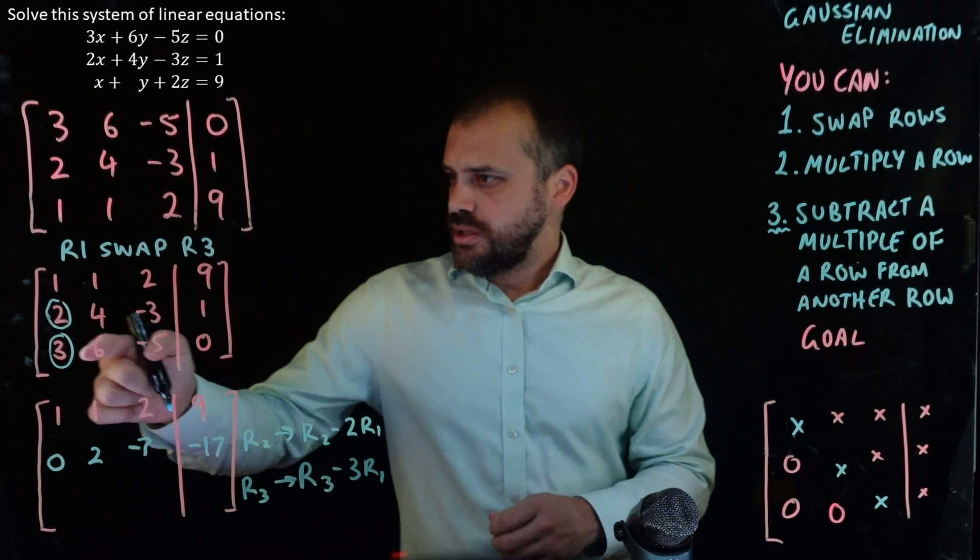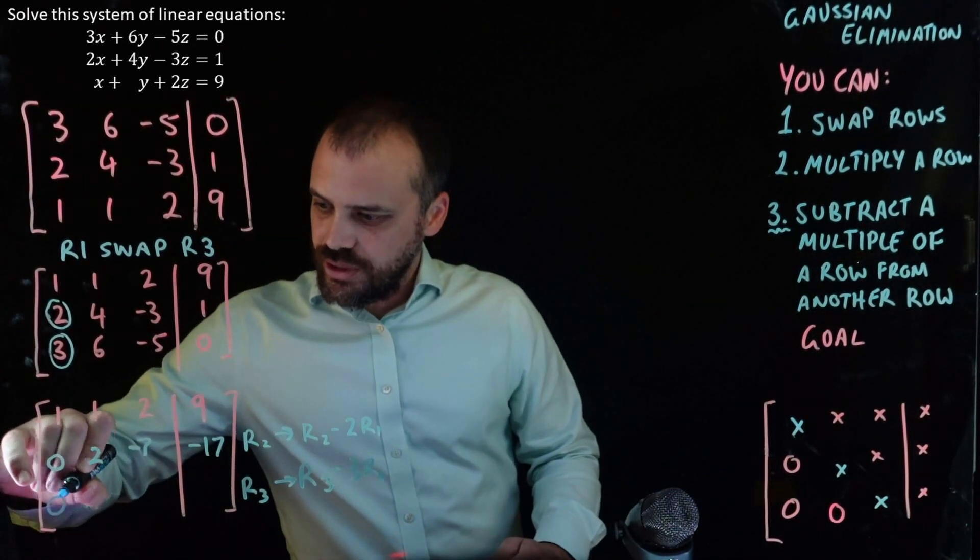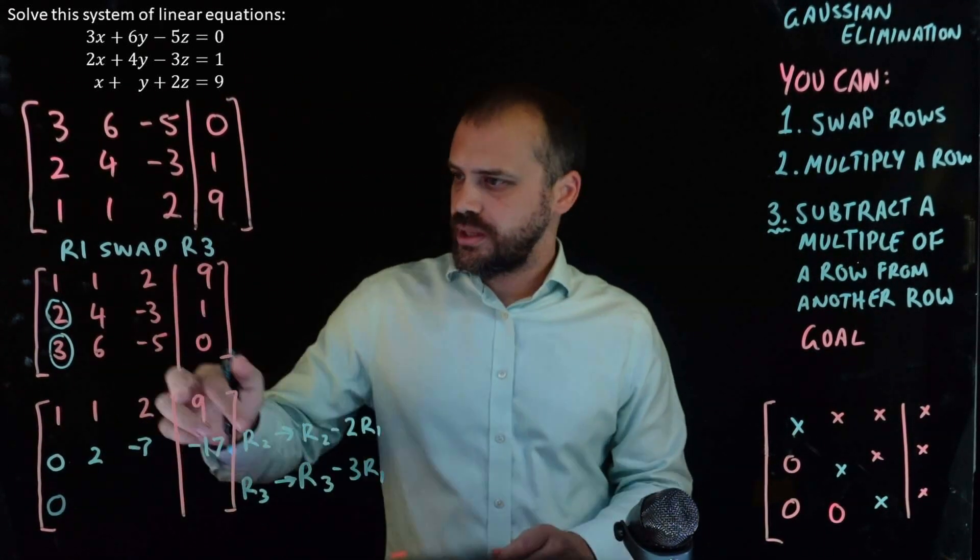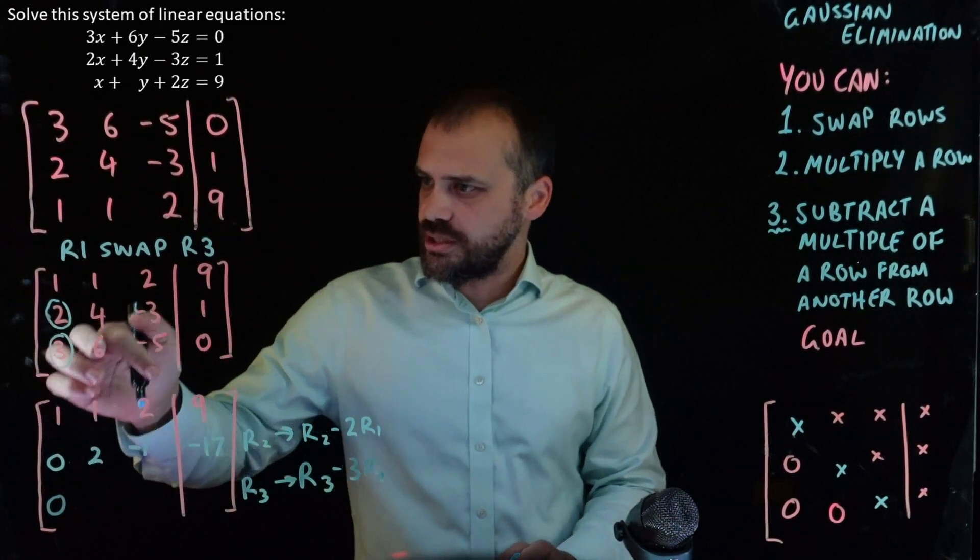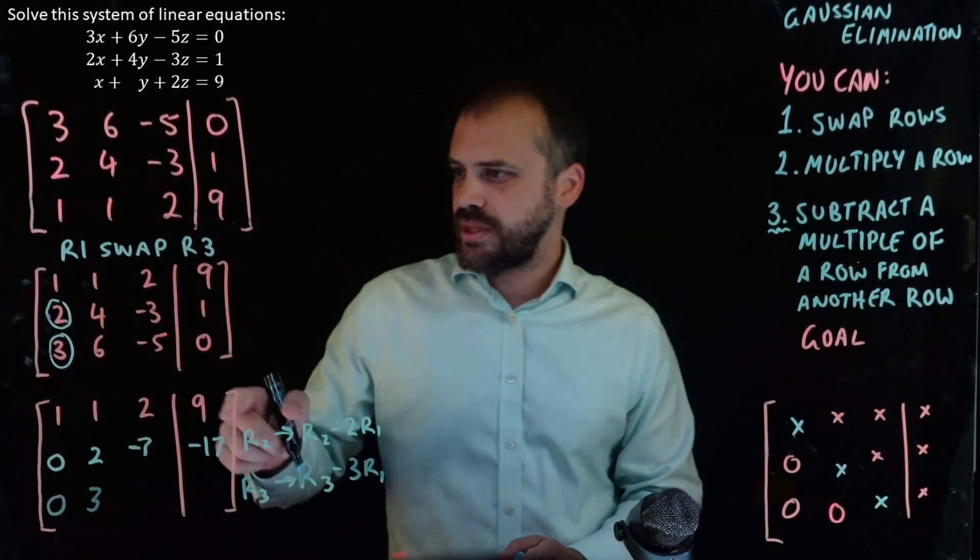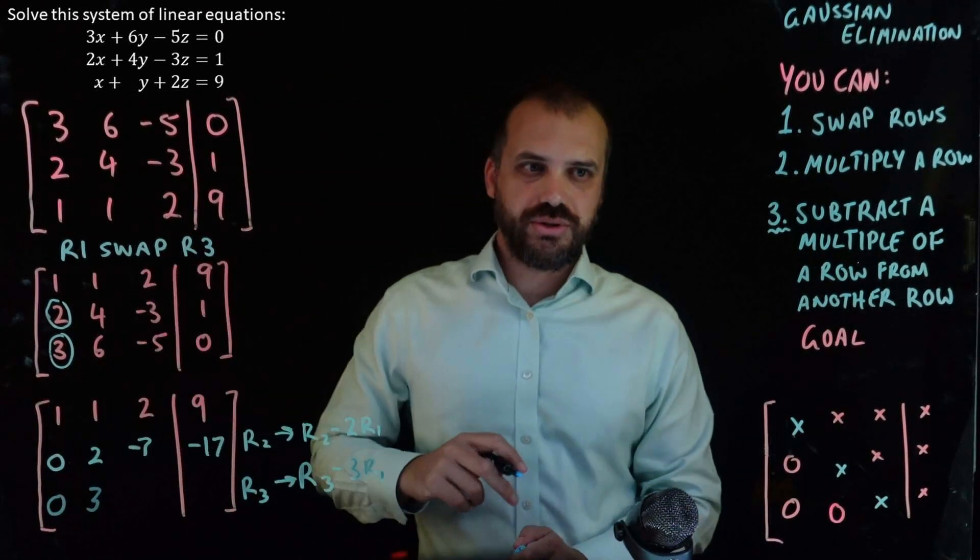All right, let's see if I can do a better job of this. Three minus three times one is three minus three, which is zero, and that's the goal. So, we've achieved our objective of making two zeros there. Six minus three times one. Six minus three is three.